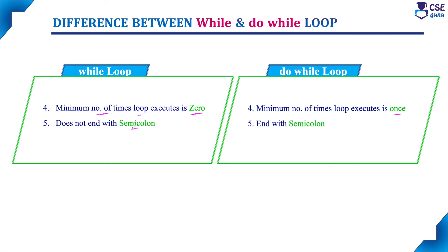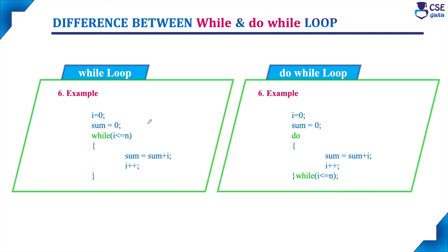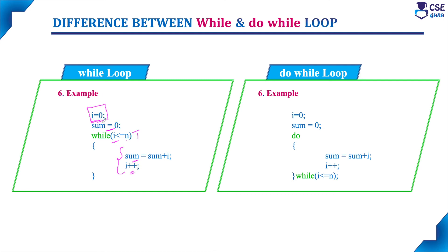In while loop it does not end with a semicolon, but do while loop ends with a semicolon. Next, considering the example to find the sum of N numbers: the variable i is initialized to zero, sum is initialized to zero. Then first itself the condition is checked whether i value is less than or equal to N. When this condition is evaluated to true only, the body of the loop will execute, and it will find the sum then update the i variable. Here the loop variable is initialized, this is the condition evaluation, and this is the loop update.